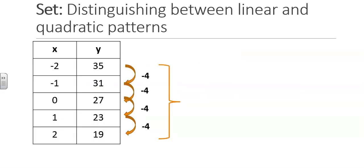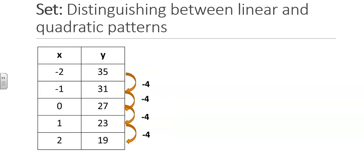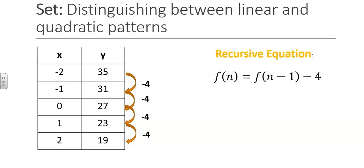Here are some examples. Let's look at the first difference for the following table. Notice that with each step, the y value is decreasing by 4. Therefore, the rate of change is negative 4. Since this is a constant rate of change, the function is linear. The recursive equation is created by subtracting 4 from the previous term, so the equation will be f(n) = f(n−1) − 4. We also want to state that the beginning of the sequence is f(0) = 27.